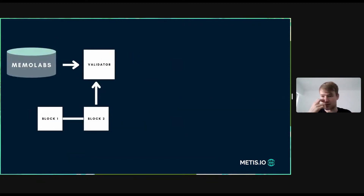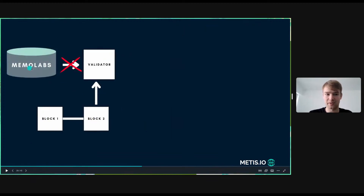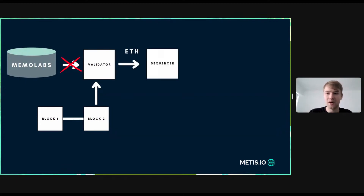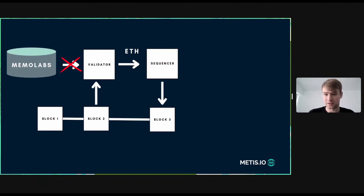In this case, we take the transaction Merkle root and the state, and we see that we can't find the data in MemoLabs. As a validator, we make a request to the sequencer — we give the sequencer some ETH to post the batch of transactions. We tell the sequencer to make this request on-chain, and they have a set number of hours to post it. If requested, the sequencer would post the data on-chain.